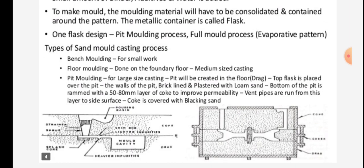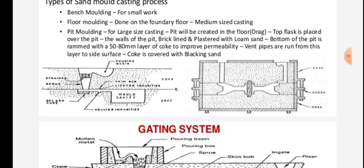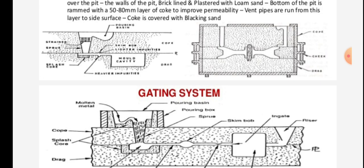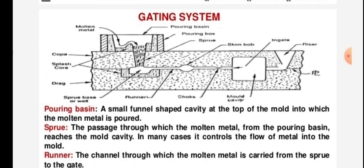In sand mold casting, molten metal is poured into the sand mold and the product is produced. The gating system components include: pouring basin, sprue, cope, plastic core, drag, skim bob, ingate, riser, mold cavity, choke, runner, and sprue base. These are the parts of the casting system.